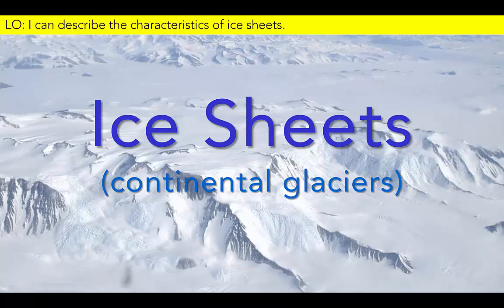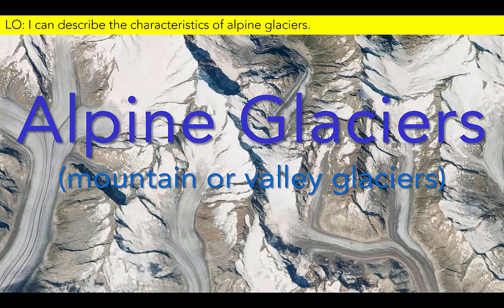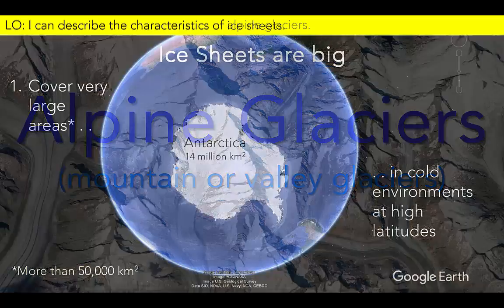We recognize two basic types of glaciers. Most of the world's ice is preserved in two massive ice sheets found in polar regions. In contrast, high mountains on most continents are home to smaller alpine glaciers, also known as mountain or valley glaciers.